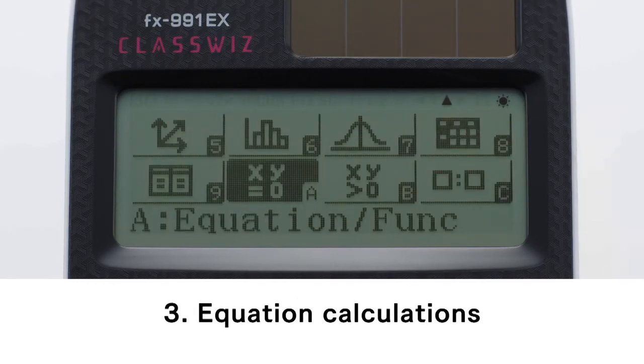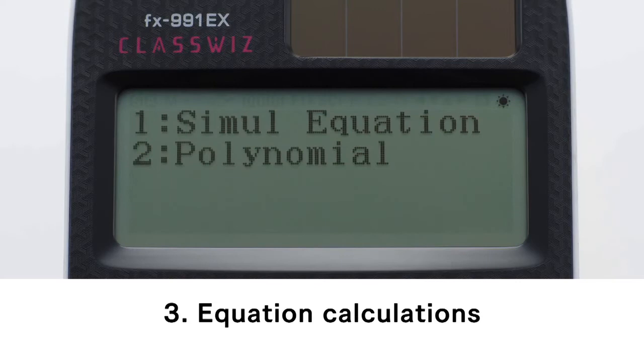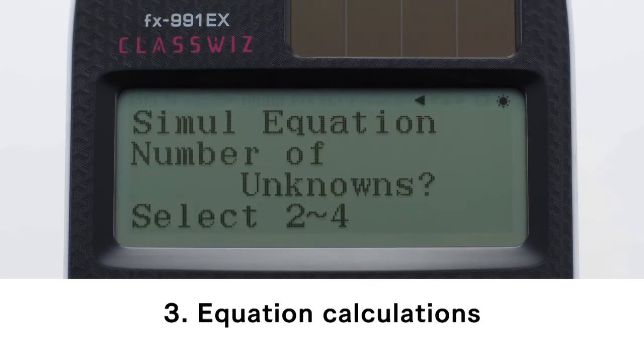Equation calculations. First, select the type of calculation: simultaneous equation or polynomial equation. Next, specify the number of unknowns.